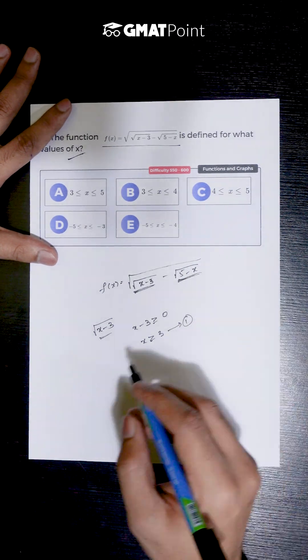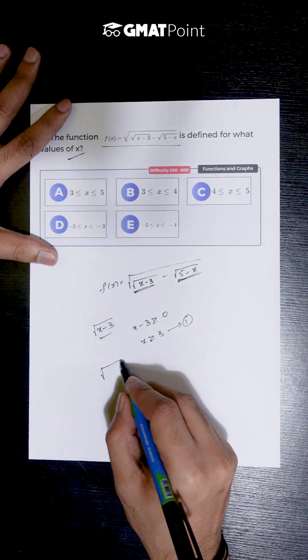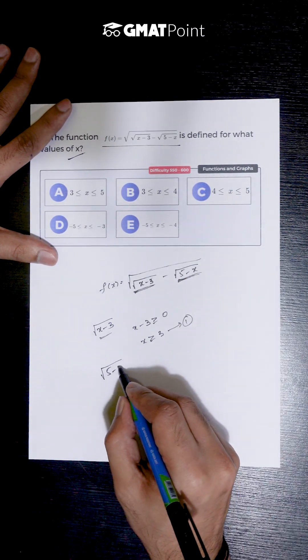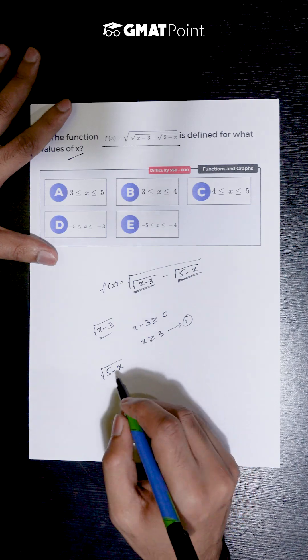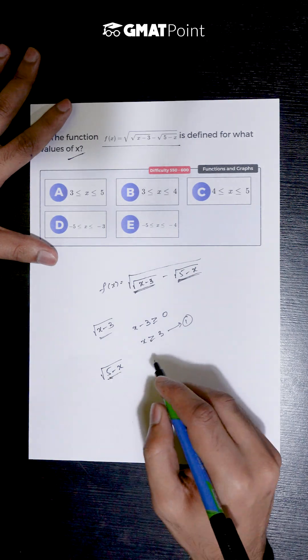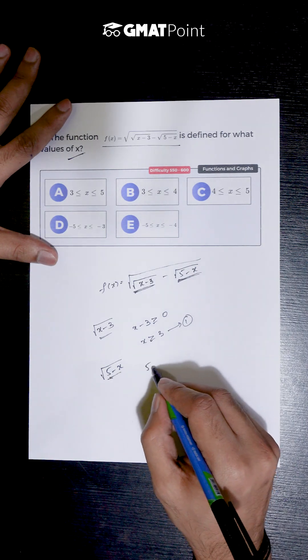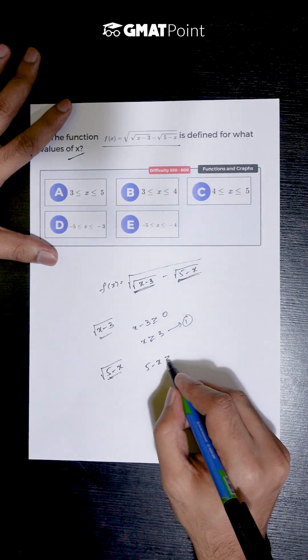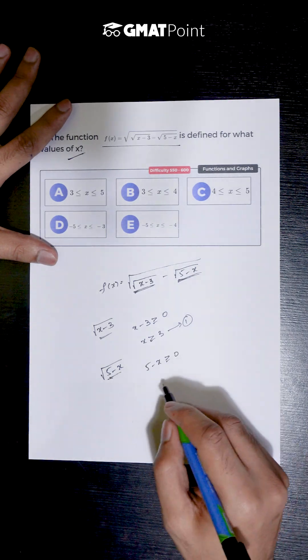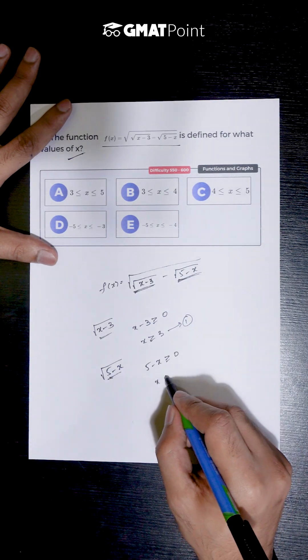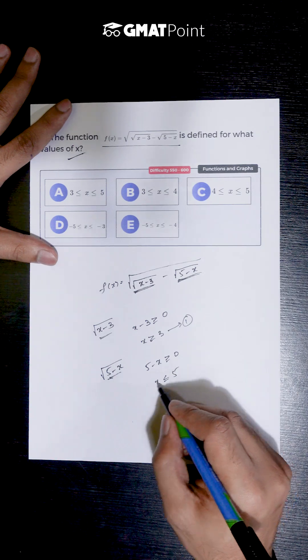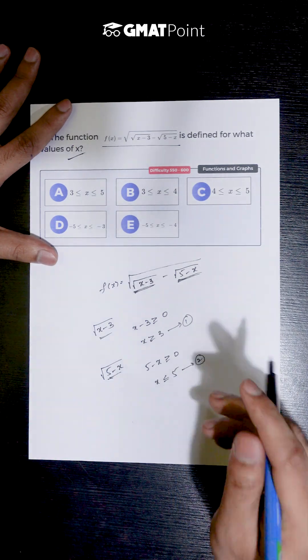Now if we take a look at the second square root, we have square root of 5 minus x. Again, the value inside the square root must be greater than or equal to 0. From this we get x less than or equal to 5.